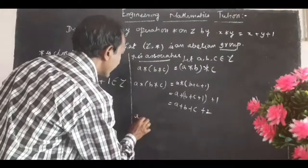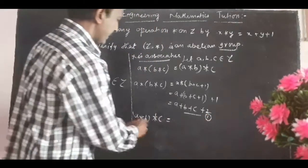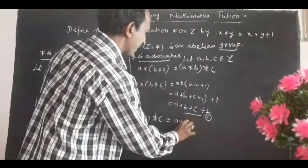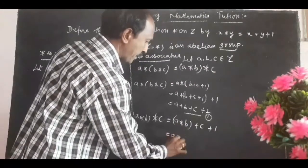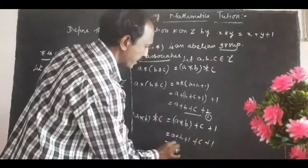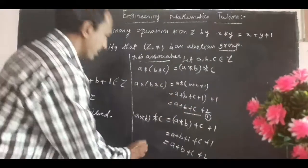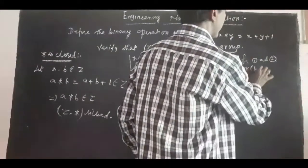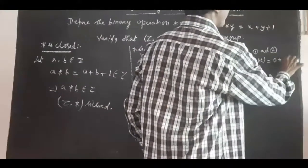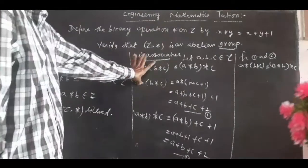Now taking the right-hand side: (a star b) star c. Since a star b equals a plus b plus 1, we get (a plus b plus 1) star c, which equals a plus b plus 1 plus c plus 1, giving us a plus b plus c plus 2. Both sides are equal, so star is associative.